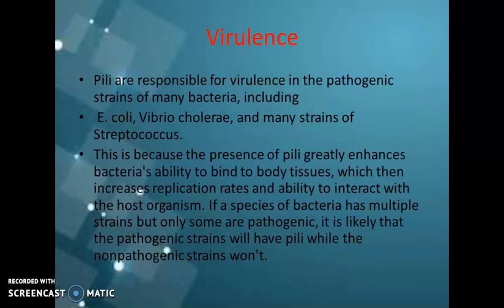Next is about virulence. Fimbria are responsible for virulence. Bacteria that lost the fimbria may become non-pathogenic, as seen with Neisseria gonorrhoeae. These fimbria are also responsible for virulence in pathogenic strains of many bacteria, including E. coli, Vibrio cholerae, and many strains of Streptococcus. This is because the presence of fimbria greatly enhances the bacteria's ability to bind to body tissue.